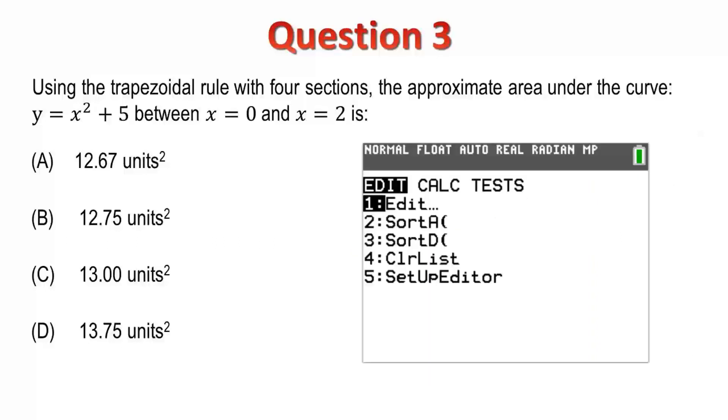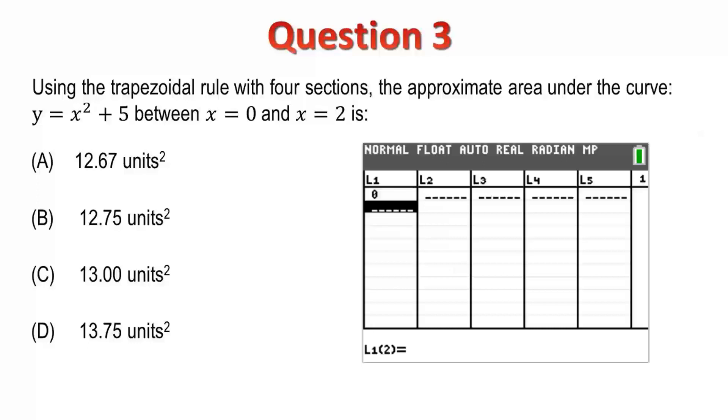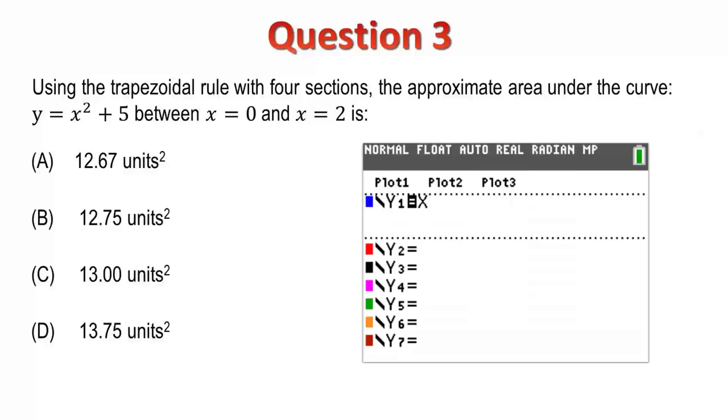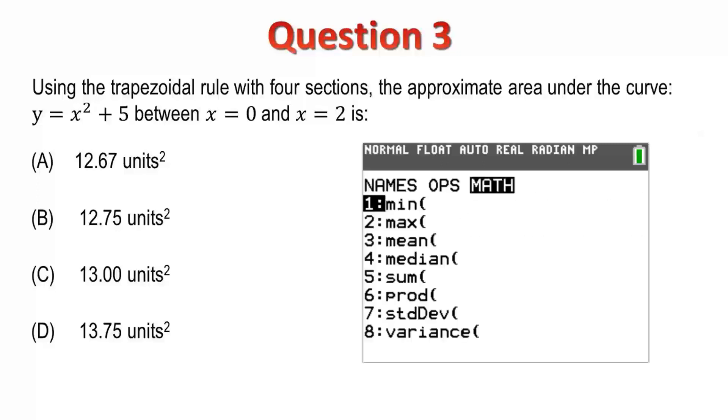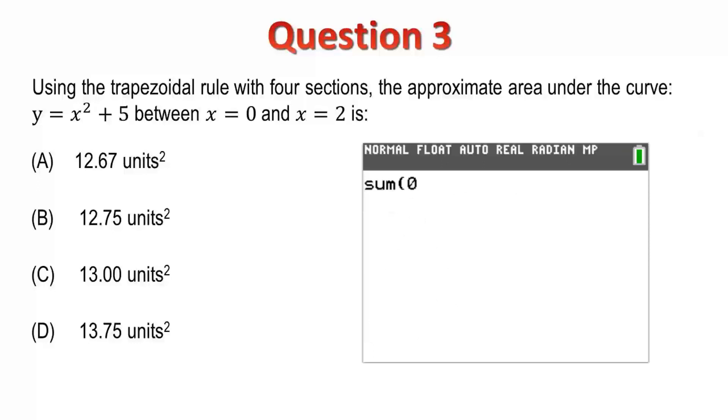The first thing I'll do is set the x values from 0 through to 1.5 in list 1. We'll use this list to calculate the value of the function at 0, 0.5, 1, and 1.5. I'll clear out the old equation in the y equals editor and enter in x squared plus 5. I can now calculate the sum of the areas, 0.5 being the width, and y1 of each of the x values, which are stored in list 1. So, we see the area of the left-bound rectangles is 11.75.